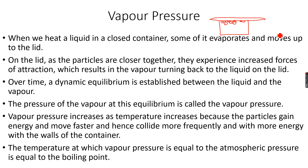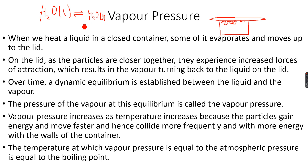There will be an equilibrium established between liquid water and steam, which we show as H2O liquid ⇌ H2O gas. At dynamic equilibrium, the rate at which the forward reaction takes place is the same as the rate at which the back reaction takes place, so there will be no overall change in the amount of liquid water and steam.